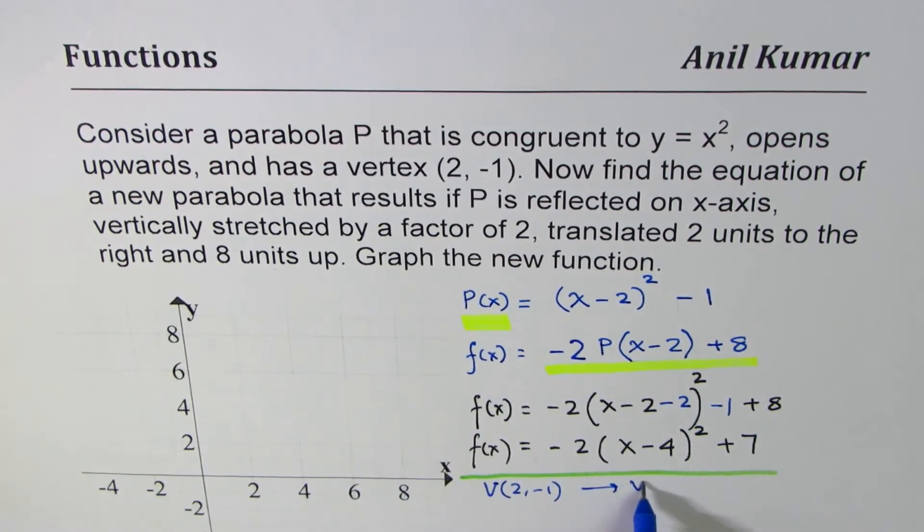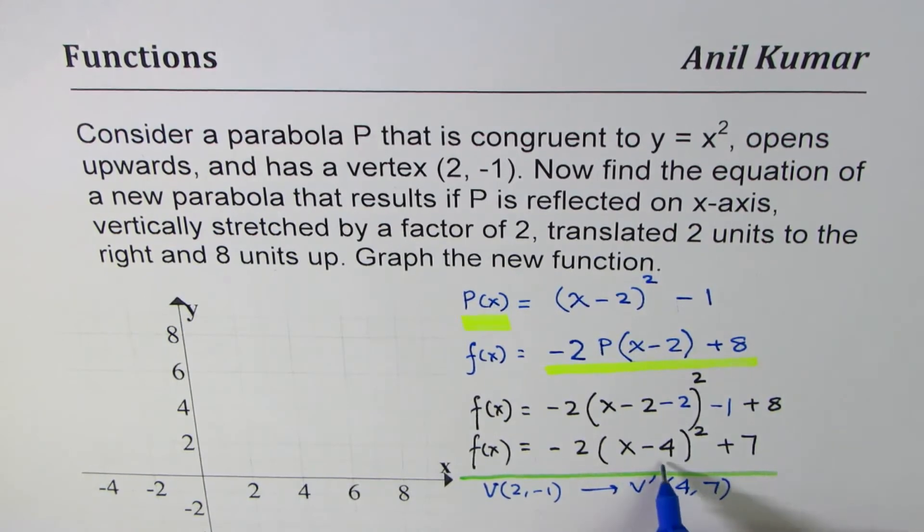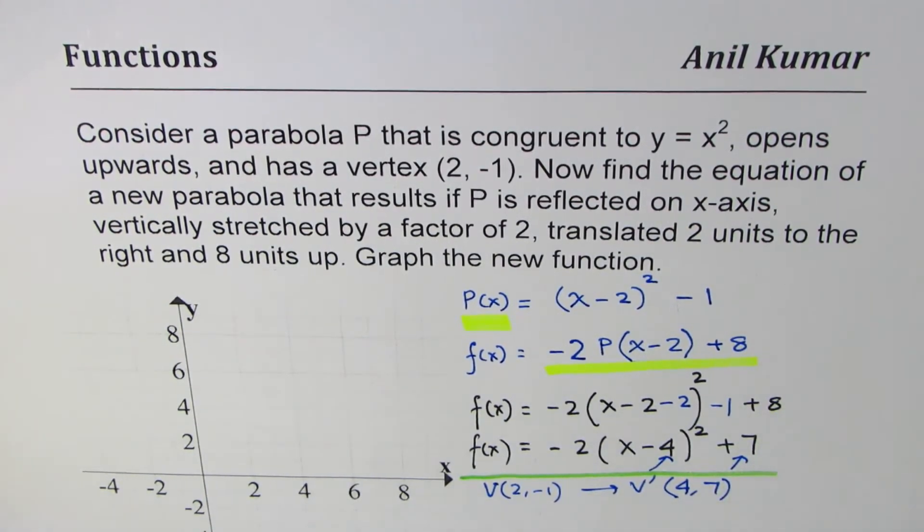So basically 2 units to the right becomes, so the new vertex will be at (4, 7) - plus 2 and plus 8 here, which gives us 7. And that is what you see here. So that is kind of a check which you could always do to figure out if we are on the right path or not.